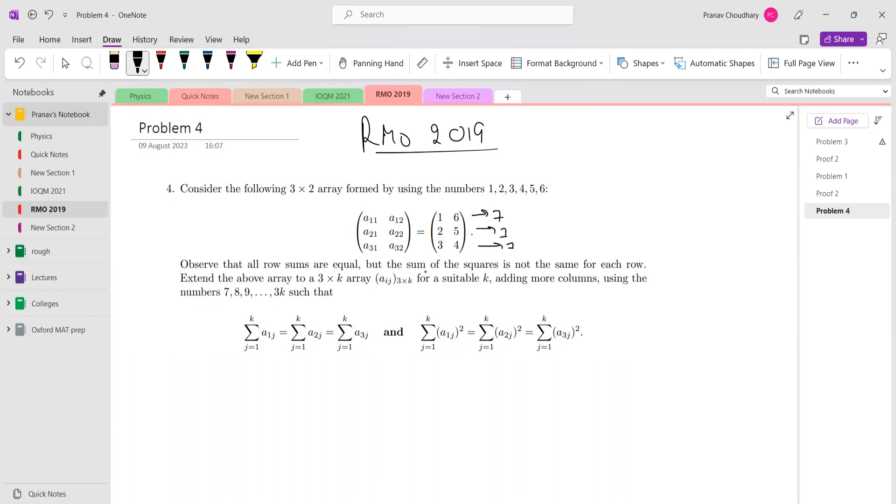It says that all the row sums are equal—this is 7, this is 7, this is 7—but the sums of squares are not the same for each row. Sums of squares for this is 1 plus 36 = 37, this is 29, and this is 25. It asks you to extend it, so there are three rows.